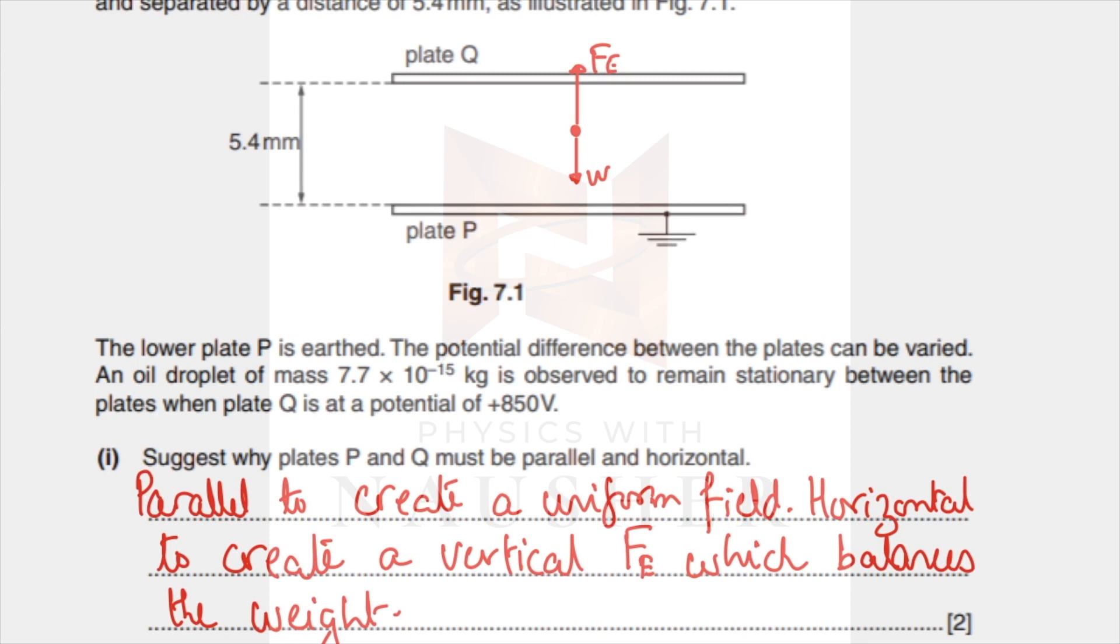Next: two parallel metal plates B and Q are situated in a vacuum. The plates are horizontal and separated by distance. Why should the plates be parallel and horizontal? Parallel because you want to produce a uniform electric field between the two plates. Horizontal because you want the charged point to remain stationary. If its weight is pulling it down, there must be a force which is upwards, and that force has to be electric. So the purpose of the horizontal plates is to create a vertical electric force or field which balances the weight.